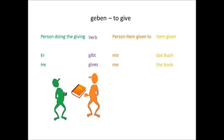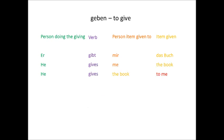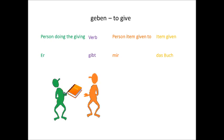I could also have phrased my English sentence as he gives the book to me. The dative in German often covers a sense of to somebody, like the to me in he gives the book to me. In fact, it not only covers it — in most cases it replaces it, and it's actually wrong to put it in. Er gibt das Buch zu mir doesn't work in German. You have to say er gibt mir das Buch.